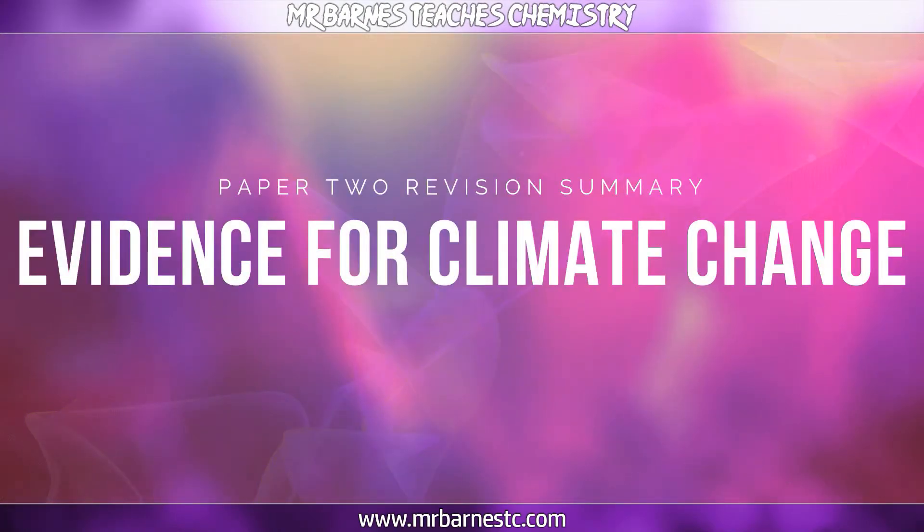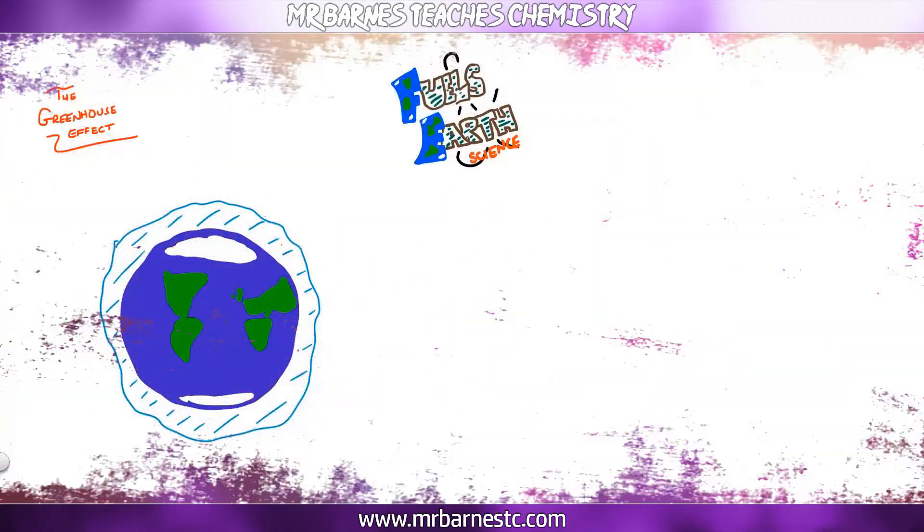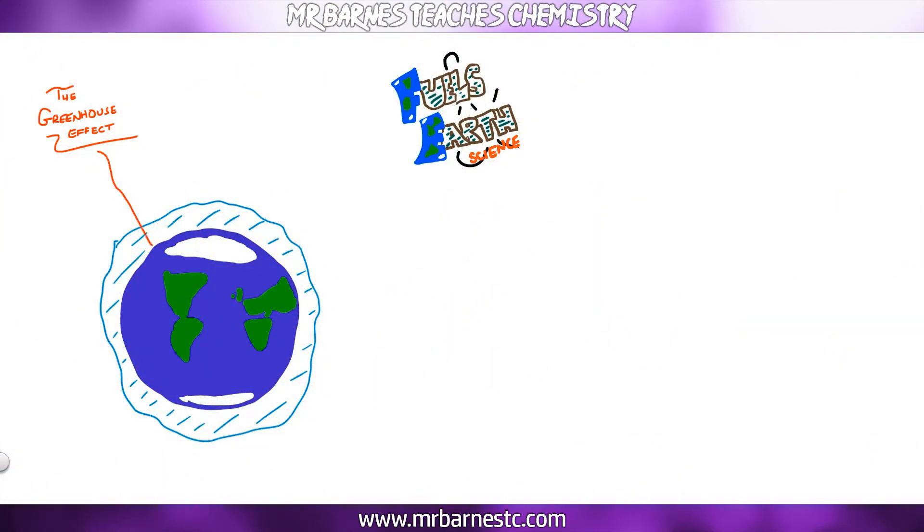The final section of this video is going to have a look at the greenhouse effect. So the sun gives out light and heat and those light and heat rays travel to the earth. Heat is absorbed by the atmosphere and the atmosphere contains greenhouse gases. Carbon dioxide, water vapour and methane CH4. Now if you increase the amount of those greenhouse gases, the more greenhouse gases there are, the more heat gets trapped.